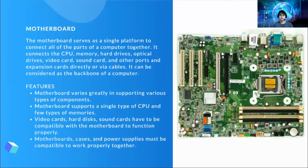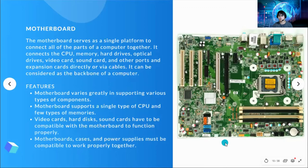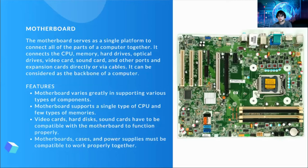Now we have the motherboard. The motherboard serves as a single platform to connect all parts of a computer together. It connects the CPU, the memory, the hard drives, the optical drives, the video card, sound card, and other parts and expansion cards directly via cables. It can be considered as the backbone of a computer. What are the different features of a motherboard? It varies greatly in supporting various types of components. It supports a single type of CPU and few types of memories. Video cards, hard disk, and sound cards have to be compatible with the motherboard to function properly.